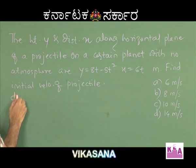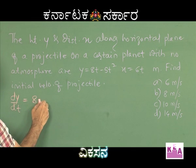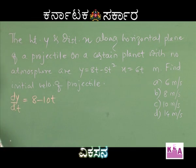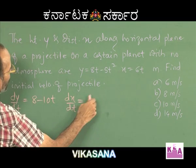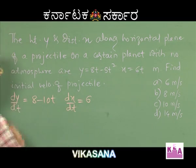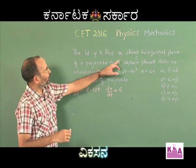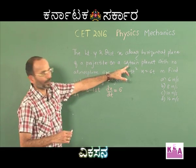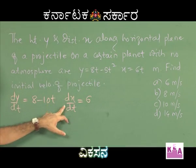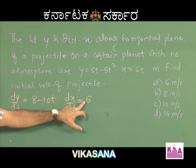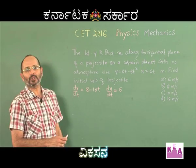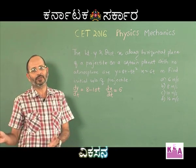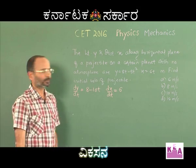Differentiating y with respect to t gives dy/dt as 8 minus 10t. Differentiating x with respect to t gives dx/dt equal to 6. You can see that by differentiating the x component with respect to time it is constant, which means there is no acceleration due to gravity in the horizontal direction — as it happens in the case of the Earth also.